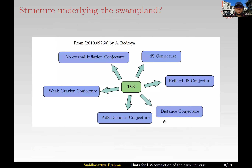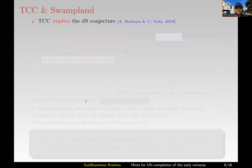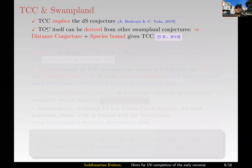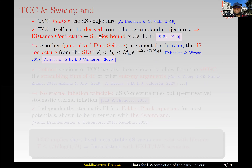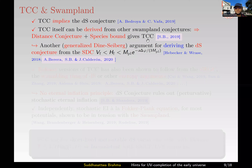There is also some structure: the TCC is related to the De Sitter Conjecture and many other things. TCC already implies the De Sitter Conjecture in asymptotic regions, and in other places as well.